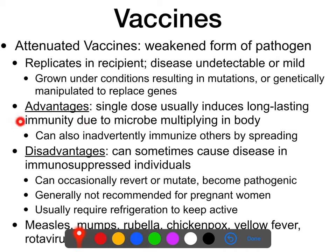Usually with attenuated vaccines, they're one and done — you get the vaccine and then have long-lasting immunity against whatever you were vaccinated against. Another advantage is that you can actually inadvertently immunize others because it is a little bit infectious. If I go get a live attenuated flu vaccine, I'm producing these attenuated particles, and my wife could catch the vaccine from me. I could infect her with the vaccine and she would end up being vaccinated as well — this helps increase spread and increase herd immunity.